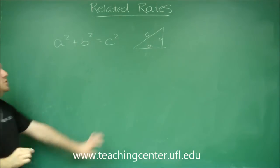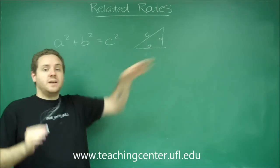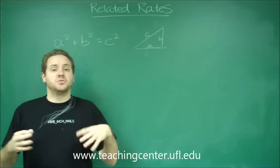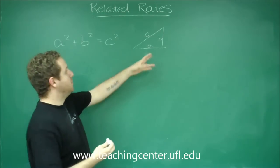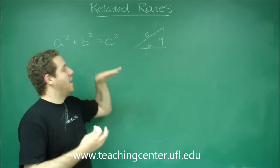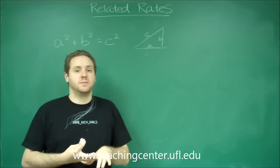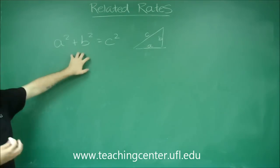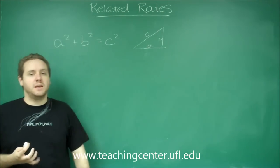So let's say you knew that A was changing at a certain rate. It was either growing or shrinking by a certain rate with respect to time. B was also growing or shrinking with a certain rate with respect to time, and you wanted to know how fast was C changing. You would have to start with this because that's the relationship between A, B, and C.